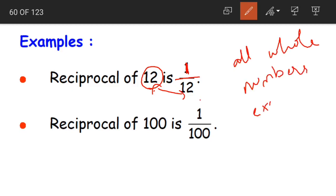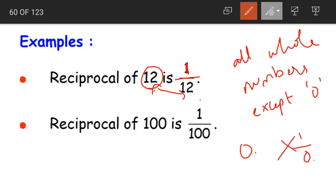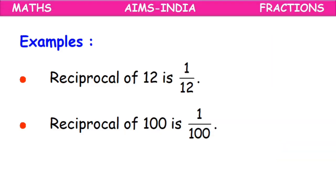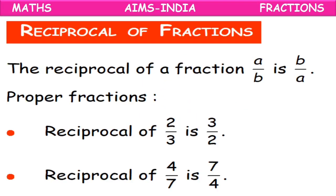This is applicable to all whole numbers except 0. When I have the number 0, its reciprocal would be 1/0, but 1/0 is not defined in mathematics. So the reciprocal of 0 does not exist. We will also learn about what happens with 0.